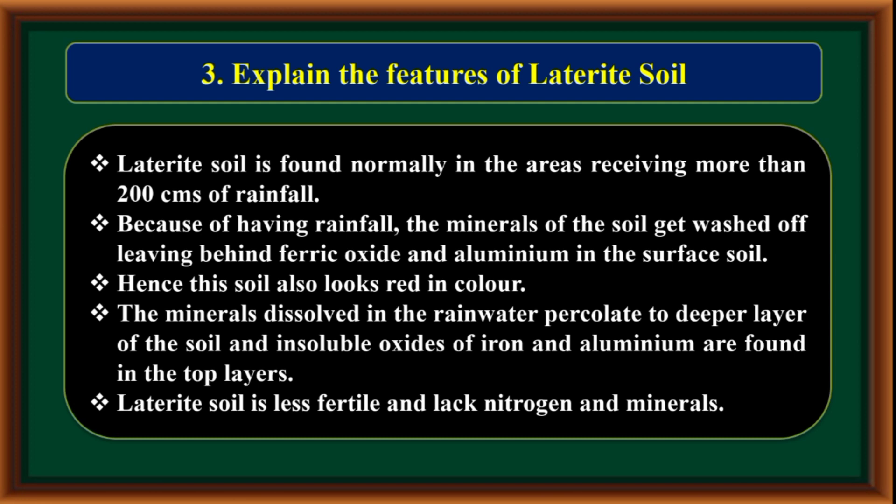Explain the features of laterite soil. Laterite soil is found normally in areas receiving more than 200 centimeters of rainfall. Because of heavy rainfall, the minerals of the soil get washed off, leaving behind ferric oxide and aluminum in the surface soil. Hence this soil also looks red in color. The minerals dissolved in rainwater percolate to deeper layers.